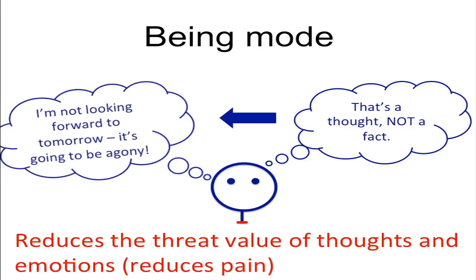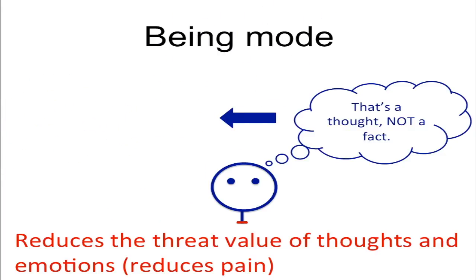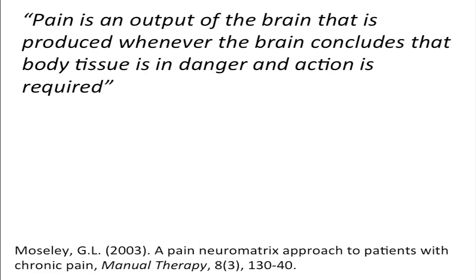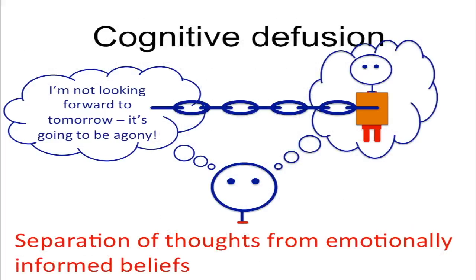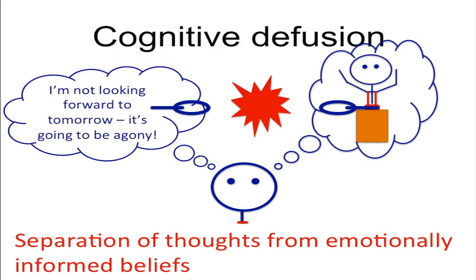All of this is important because pain is produced by the brain. The brain decides when we have pain, how much pain we need, and how long it should last. But danger comes not just from damage information, but also from our thoughts, our emotions, and our actions. So we need to separate thoughts from beliefs — something called cognitive diffusion.